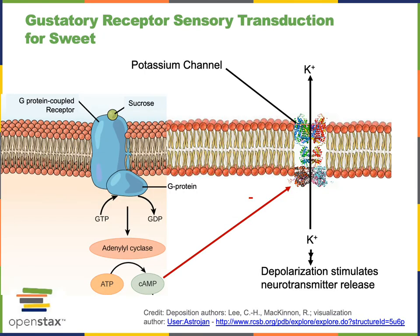The transduction mechanism for the sweet taste involves a sugar molecule like sucrose binding to a G protein coupled receptor on the surface of gustatory receptor cells in the tongue. The G protein coupled receptor activates the enzyme adenylyl cyclase, leading to the production of the second messenger molecule cyclic AMP. As cyclic AMP accumulates in the cytosol, it inhibits a potassium channel. As potassium channels close, this creates depolarization that stimulates the release of neurotransmitters from the gustatory receptor cell onto the dendrites of afferent neurons.